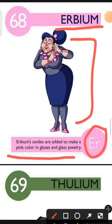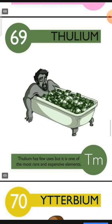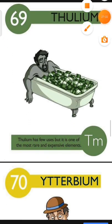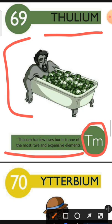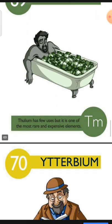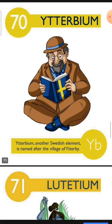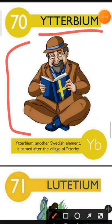Element number 69 is Thulium. The characteristic of Thulium is: Thulium has few uses but it is one of the most rare and expensive elements. Element number 70 is Ytterbium. The characteristic of Ytterbium is: Ytterbium, another Swedish element, is named after the village of Ytterby.